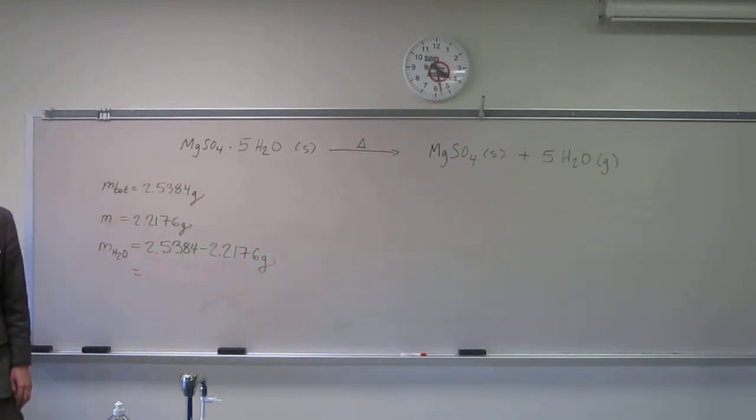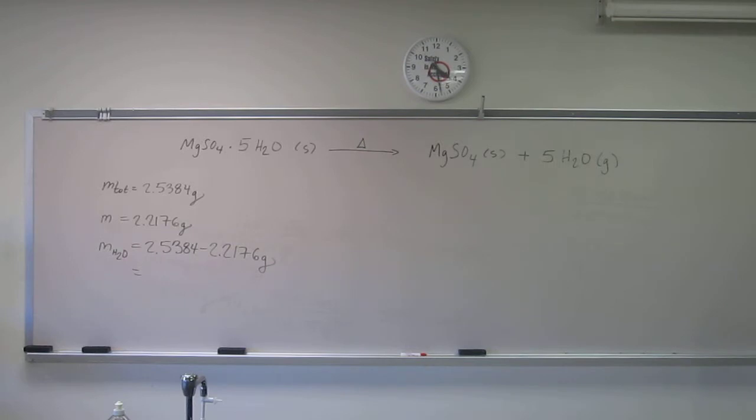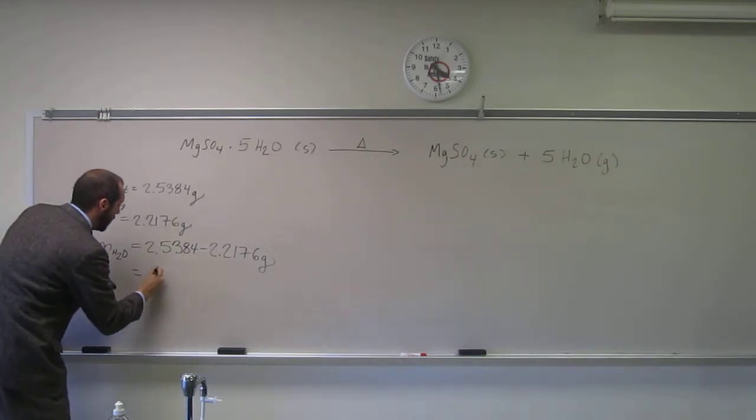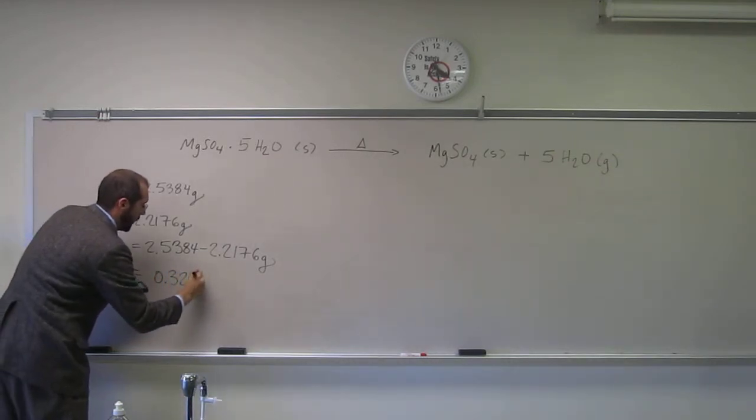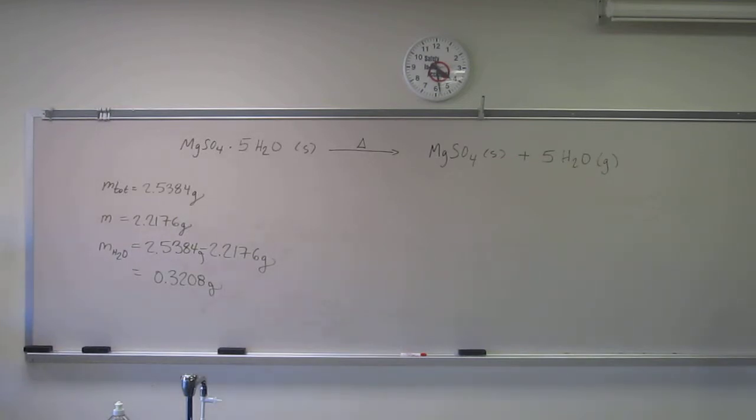So what would the mass of the water be? I'm sure that's what you would have put. So 2.5384 minus 2.2176 grams, right? That's how many grams of water. Okay, so what should we figure out now?